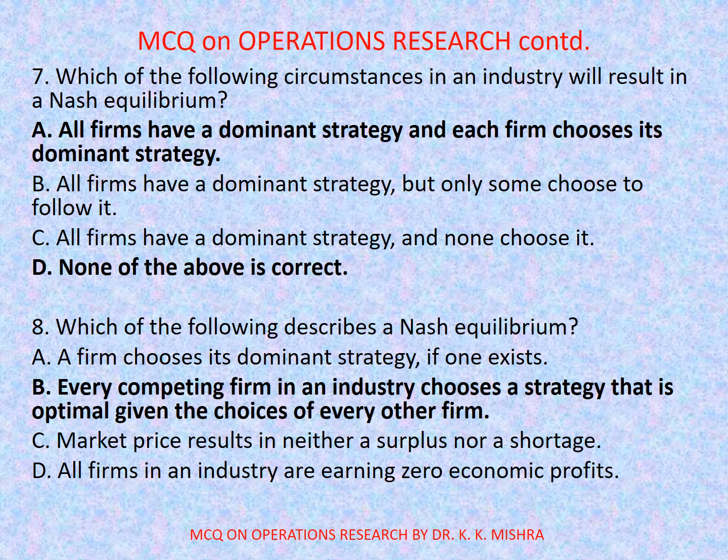Question number 8: Which of the following describes Nash equilibrium? Options are: a) a firm chooses its dominant strategy if one exists, b) every competing firm in an industry chooses a strategy that is optimal given the choices of every other firm.